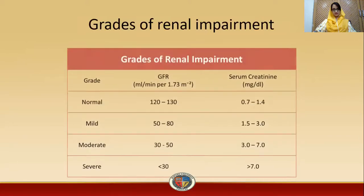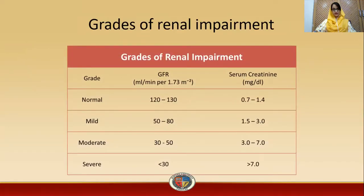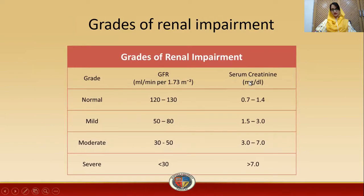Now we will look at the grades of renal impairment. In the normal grade, GFR is 120 to 130 ml per minute per 1.73 meter squared, and serum creatinine level is in the range of 0.7 to 1.4 milligrams per deciliter.